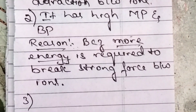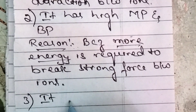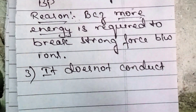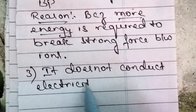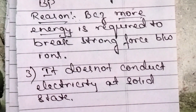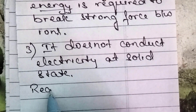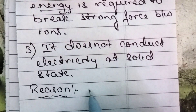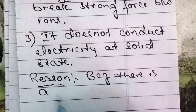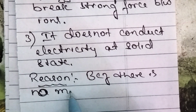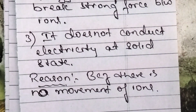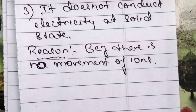Then coming to the third property of ionic compounds. The third property is that ionic compounds do not conduct electricity at solid state. Why do ionic compounds not conduct electricity at solid state? Because there is no movement of ions. Since ions cannot move, electricity is not conducted. This is the third property and its reason.